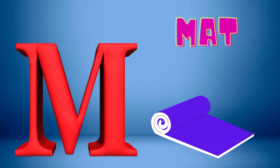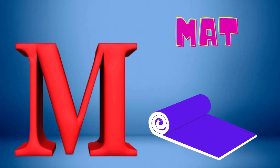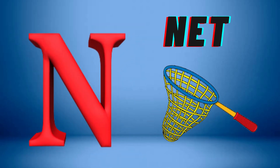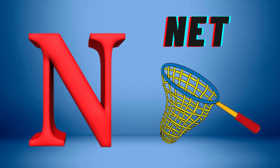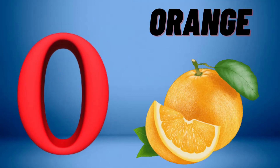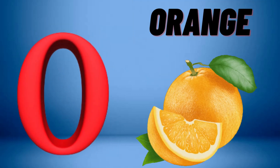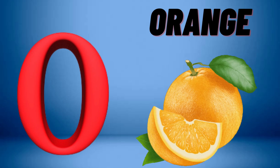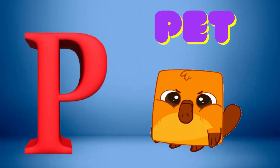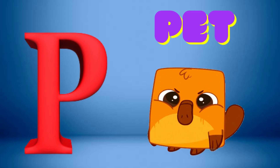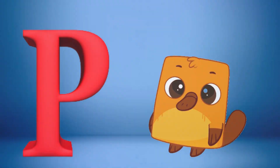M is for Mat, M-M-Mat. N is for Net, N-N-Net. O is for Orange, O-O-Orange. P is for Pet, P-P-Pet.